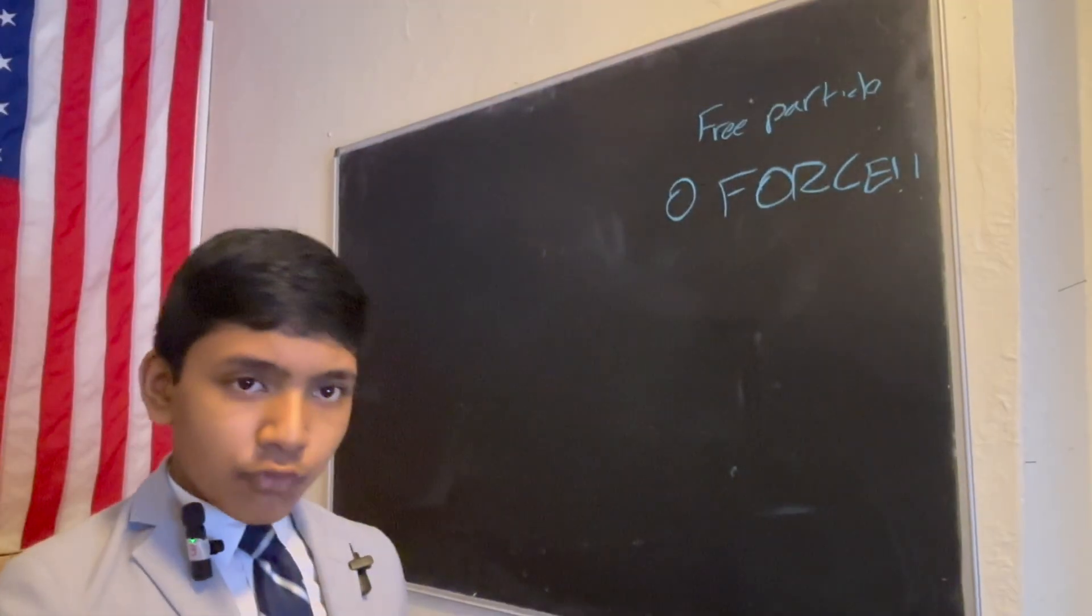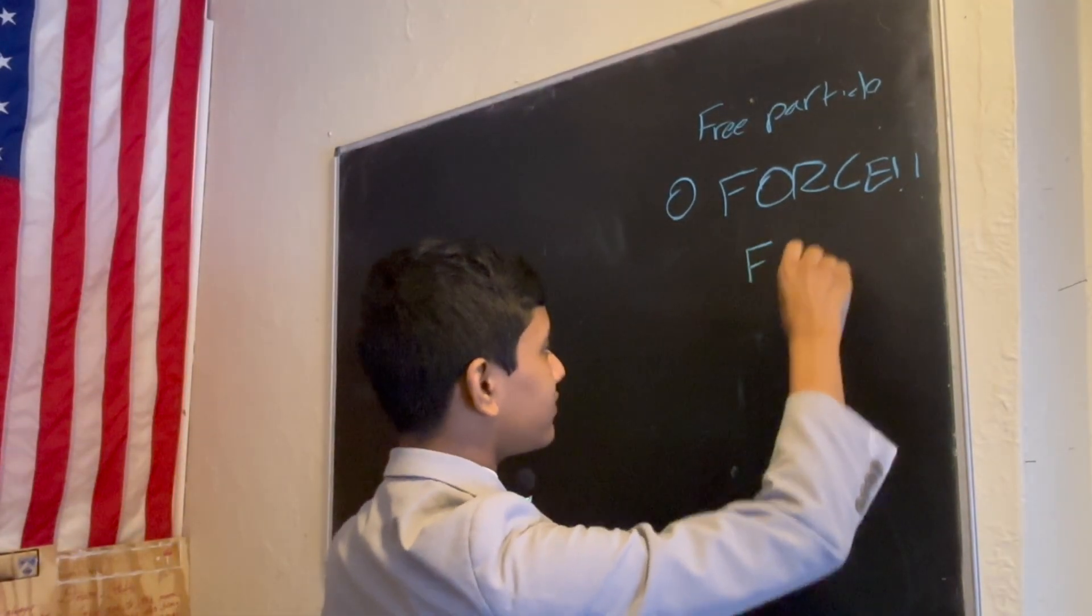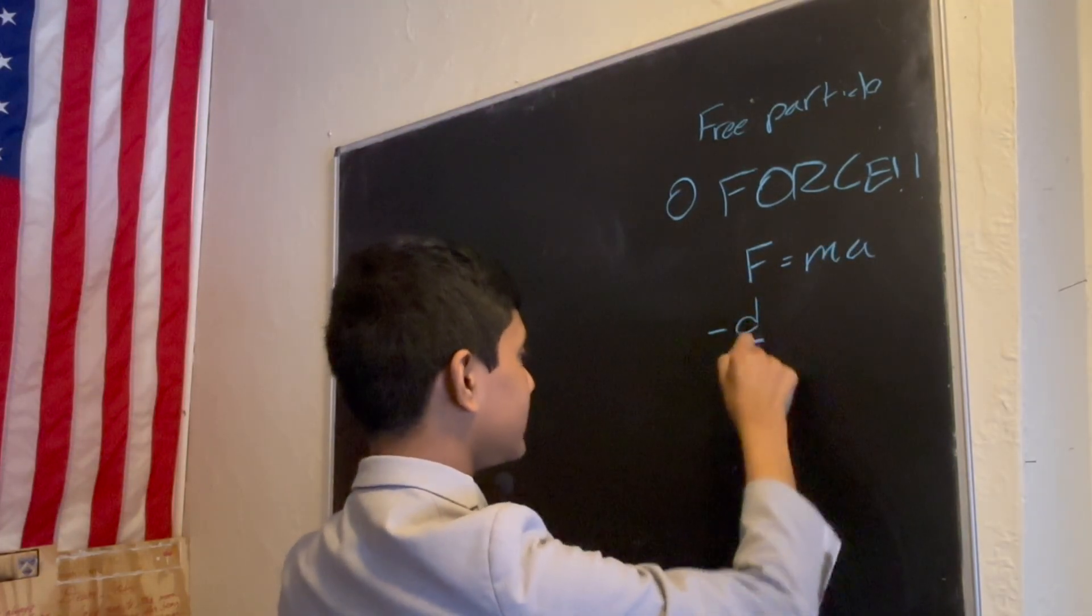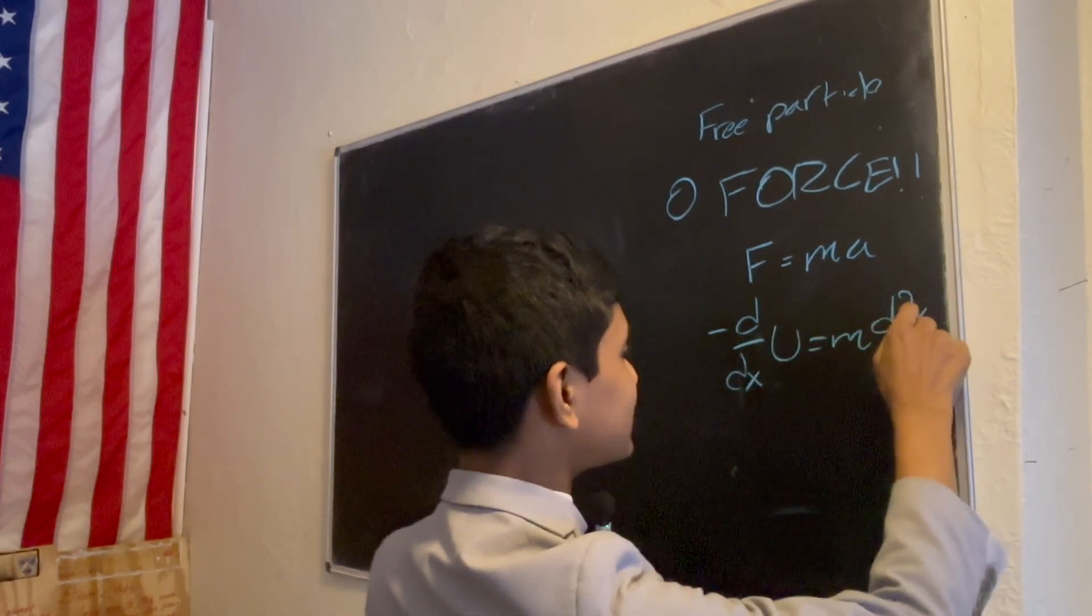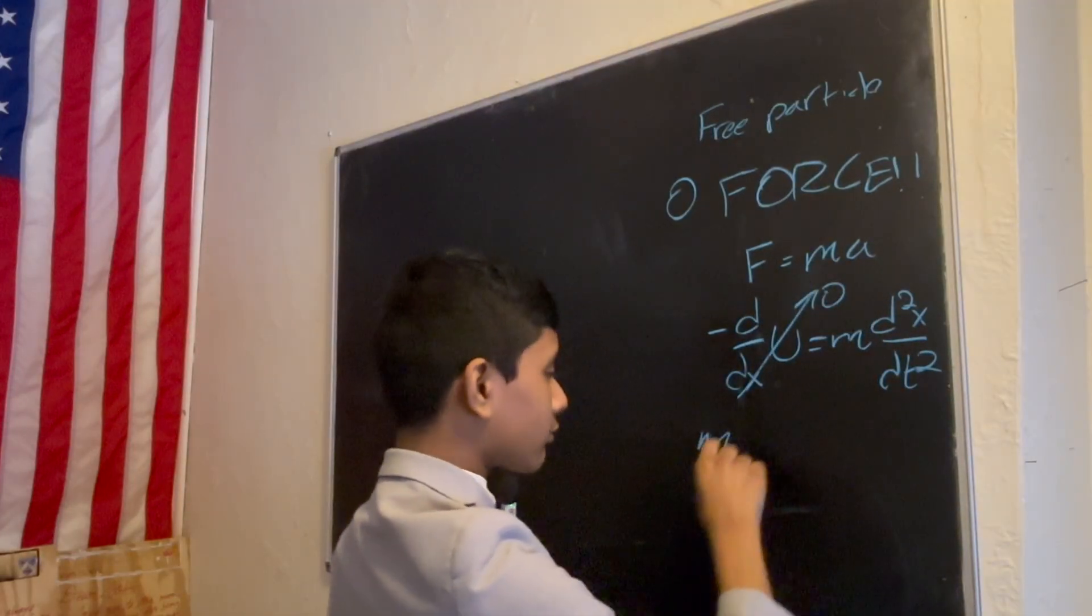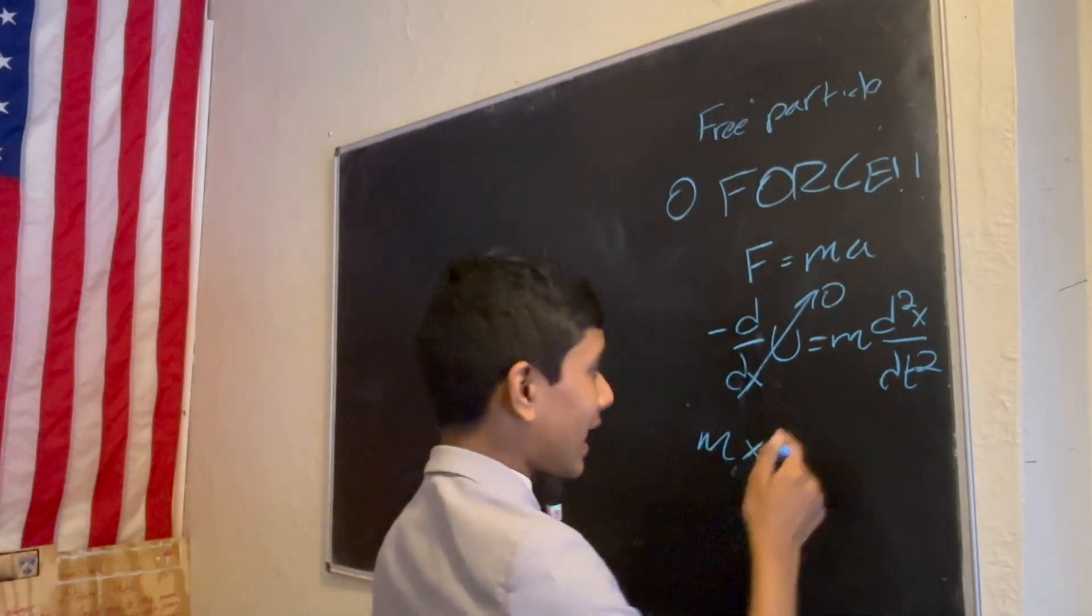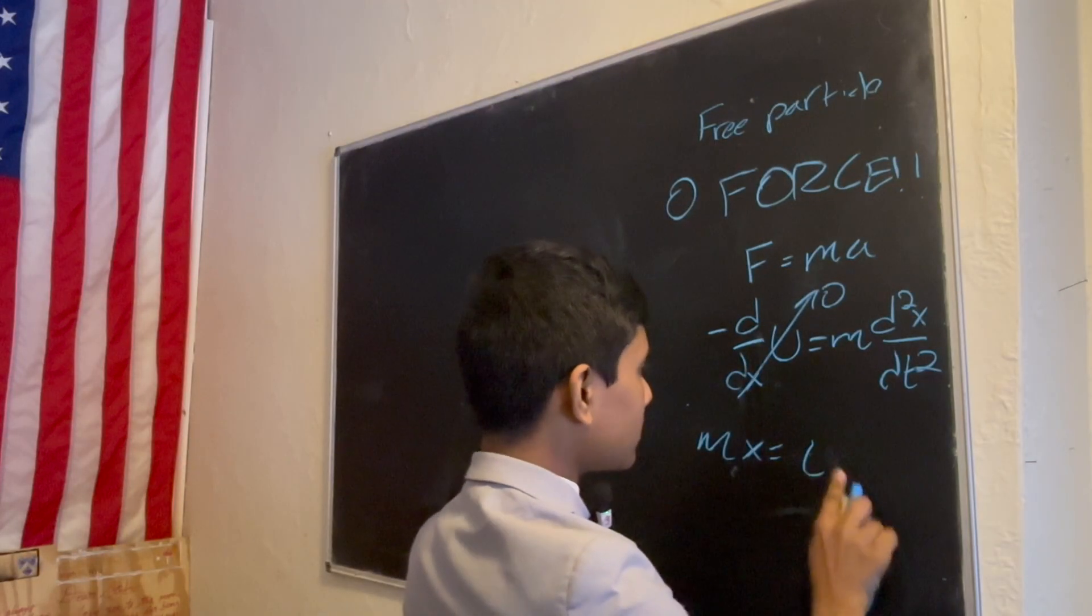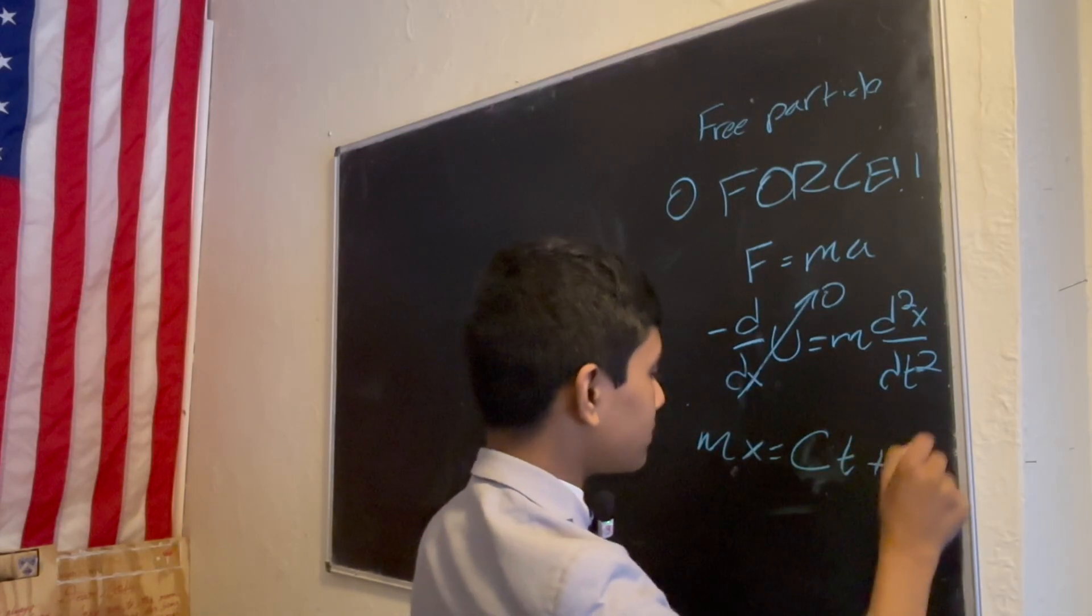So, if there's zero force, what happens if we plug into F equals MA? Well, this becomes minus d dx u, at least in one dimension, equal to m d squared x dt squared. And if this goes to zero, then you integrate twice, and you find out mx is actually equal to c, with respect to t, of course.